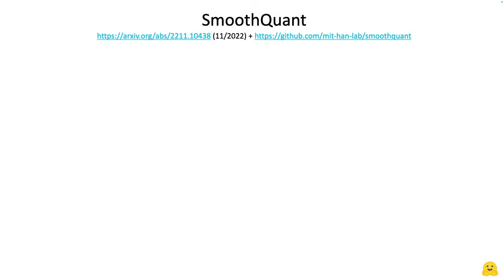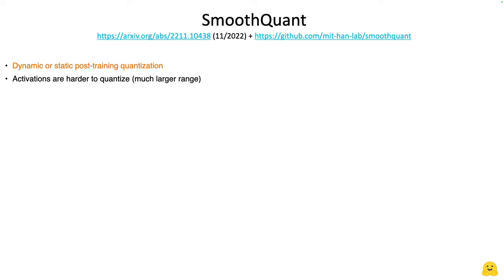I will stay off screen for this, because the slides are a little busy. SmoothQuant is a post-training quantization technique, and you can apply it dynamically or statically with a calibration dataset. One of the key findings in SmoothQuant is that activations are much harder to quantize than weights, because they display a much larger numerical range.